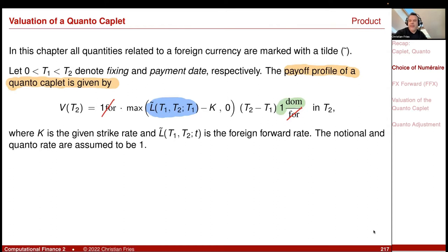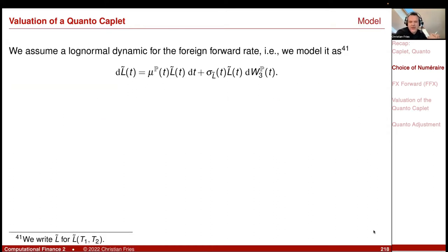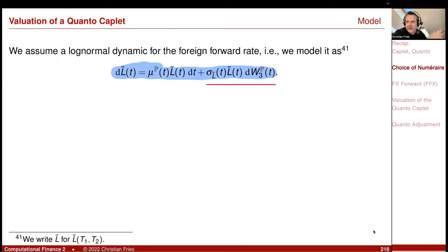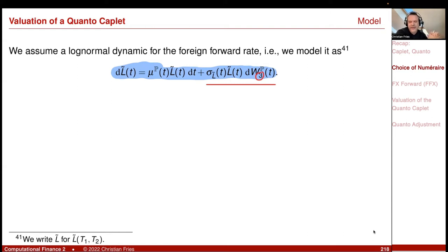Let's start like we worked for the foreign Kaplet. Assume a model for L̃ — a Black-Scholes-like log-normal dynamic. For the diffusion, sigma_L̃ times L̃ times dW3. I use three here because later I may need other Brownian drivers for other model components: domestic is one, the currency exchange rate is two, and the foreign is three. Let's see what we will need to value this product. I start with the same model as for the foreign Kaplet.